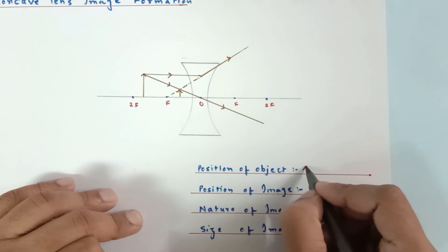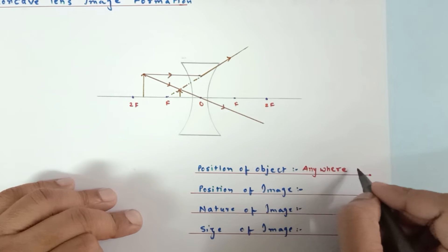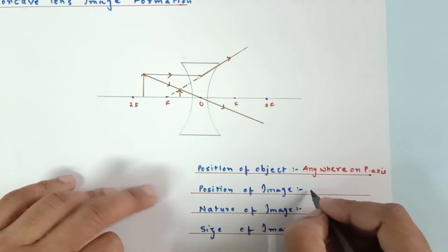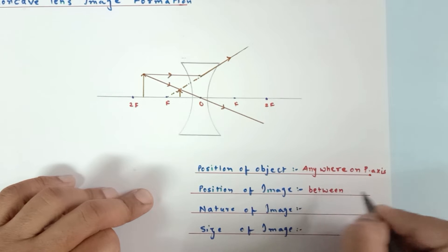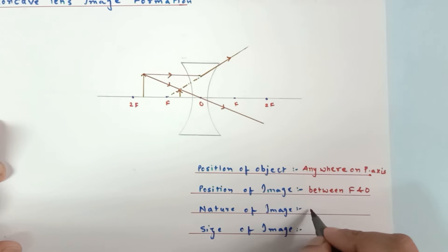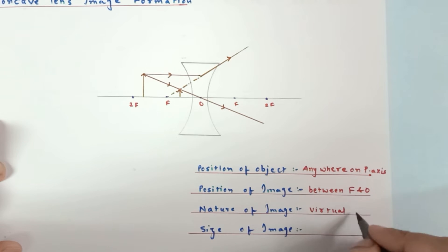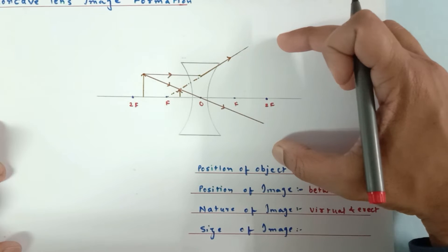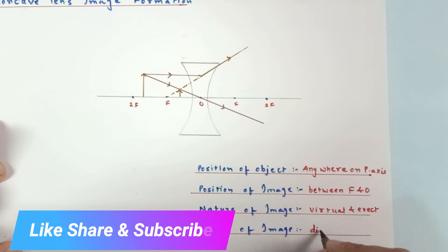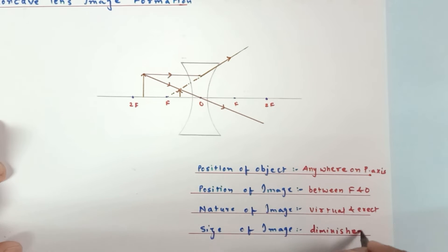Let's note down these points. Position of the object: you can place it anywhere on the principal axis. Position of image: always between f and O. Nature of image: always virtual and erect, because it is a diverging lens and the refracted rays never meet — you extend them backward and always get a virtual, erect image. Size of image: smaller, or diminished. This was Case 1.